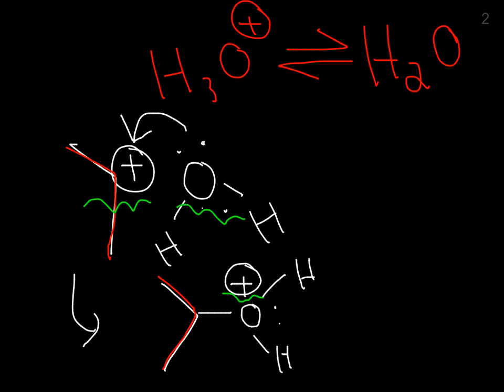However, what can happen is, another water in solution, so another OH2, is going to go and pull one of the hydrogens off of that oxonium species, and then those electrons are going to go on to that oxygen to return as lone pairs, and that oxygen will be neutral, and that water will become an oxonium species.